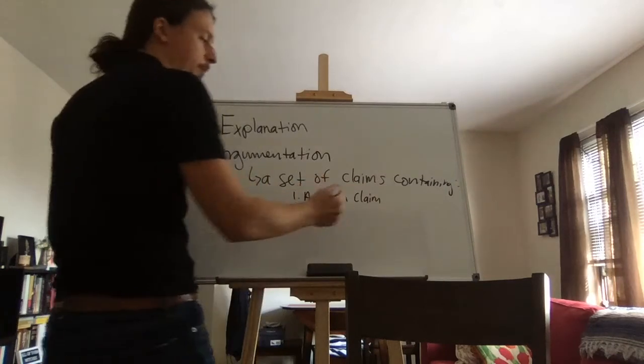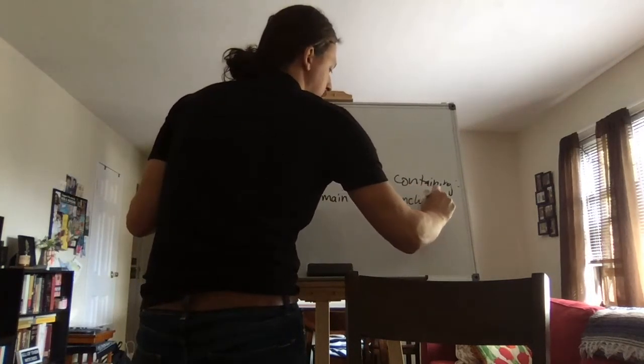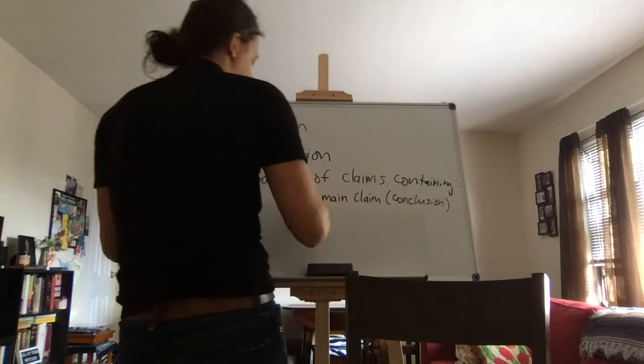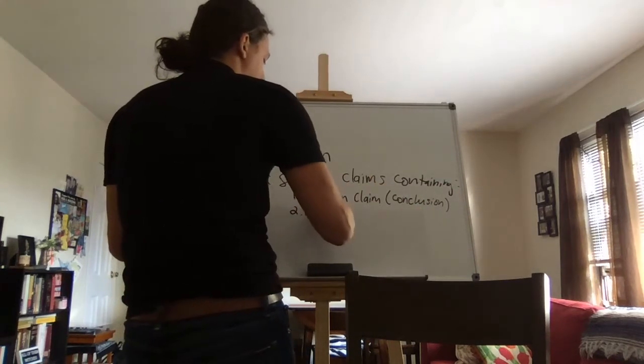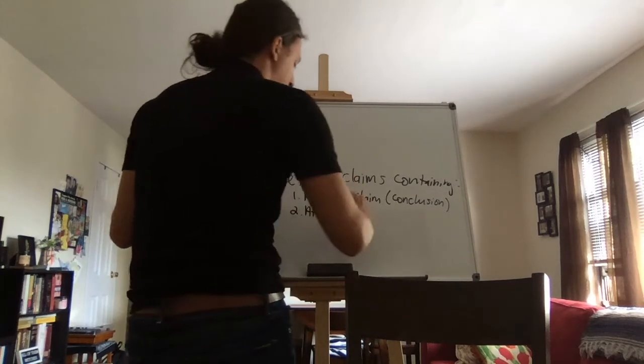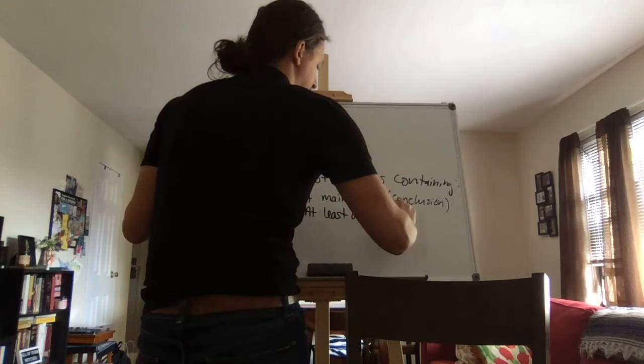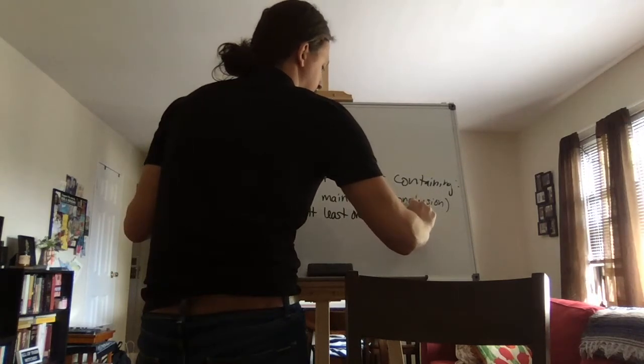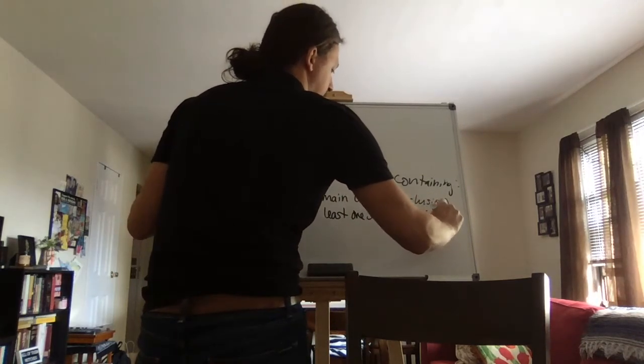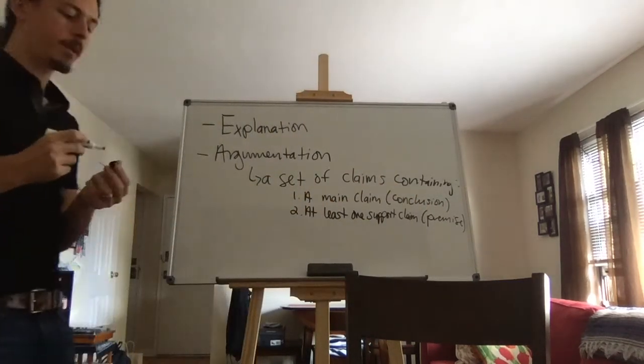We say that it is, first and foremost, a set of claims containing a main claim. But really, this is another way of saying a conclusion. And at least one support claim, which we call premises. That's what's involved in an argument.